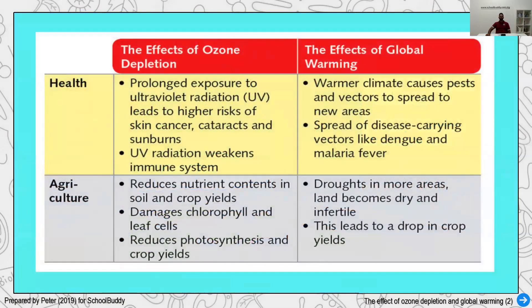Let's see the different effects taking place. In terms of health, a lot of UV rays is harmful because it penetrates your skin, causing skin cancer, cataracts affecting your eyes, and sunburns of higher degree. UV rays also affect your genes, your DNA and chromosomes, and can affect your immune system function.